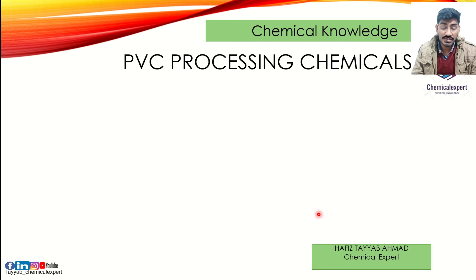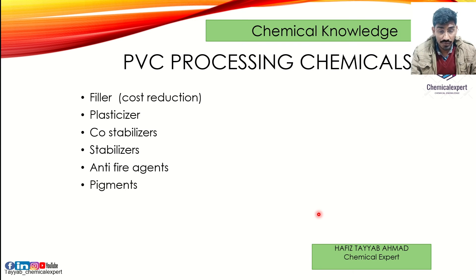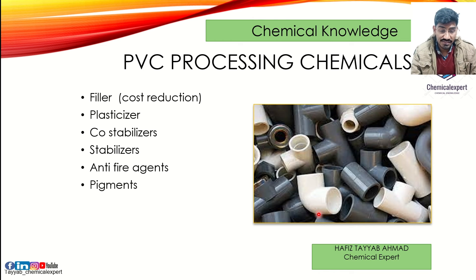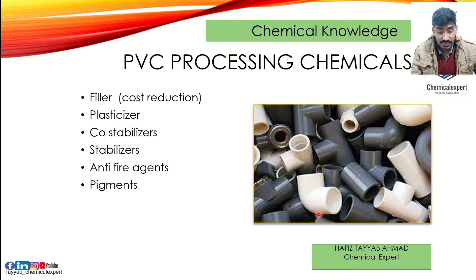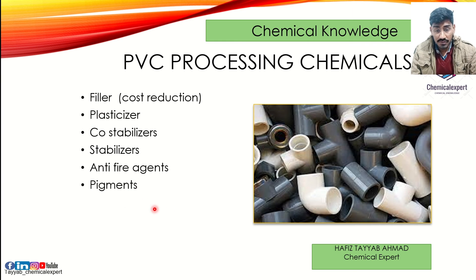PVC processing chemicals include fillers, which are added for cost reduction; plasticizers, which are helpful for enhancing flexibility; co-stabilizers, which help maintain the polymer for longer duration; anti-fire agents such as ammonium phosphate and other oils; and pigments — black, white, and different colors are added according to the desired product and requirements.